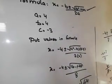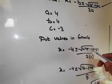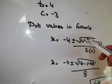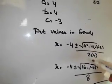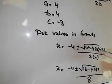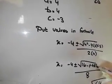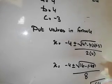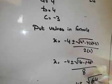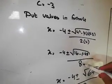Now let's calculate. We have minus 4 plus-minus under root: 4 squared is 16, then 4 × 4 × 3 = 48. So under the root we have 16 + 48 = 64. And the denominator: 2 × 4 = 8.